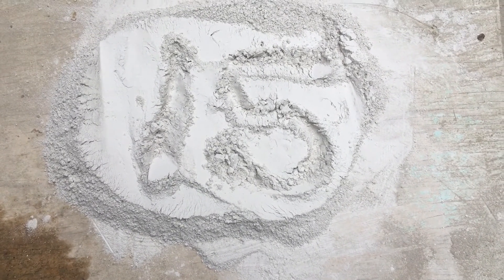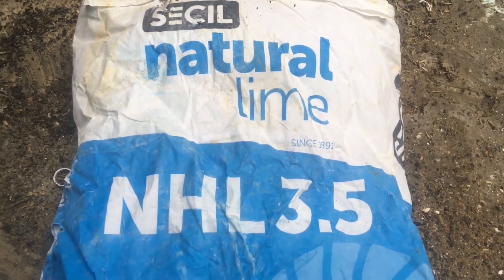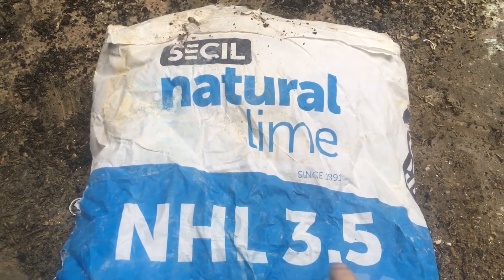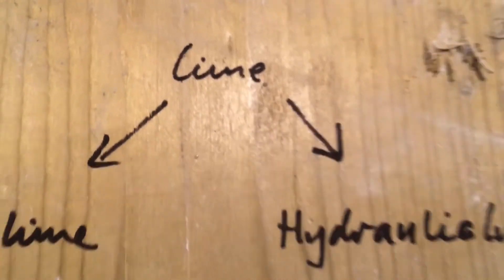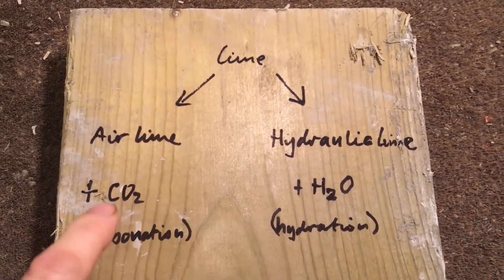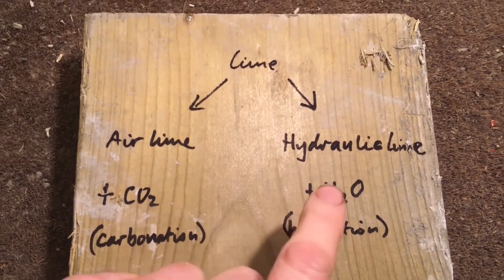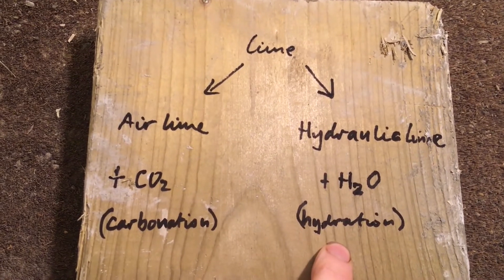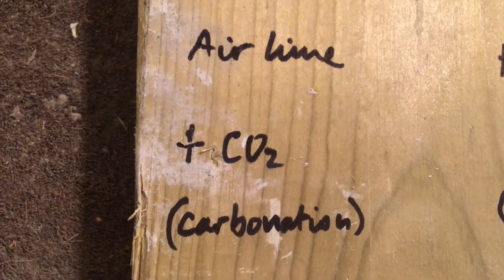Episode 15: what is lime? Specifically, what's all this about NHL? NHL stands for natural hydraulic lime, and this number takes a bit of explaining. There are two types of lime: air lime and hydraulic lime. Air lime cures in the presence of CO2 from the air by a process of carbonation, and hydraulic lime cures in the presence of water in a process of hydration.